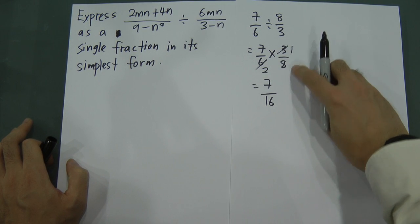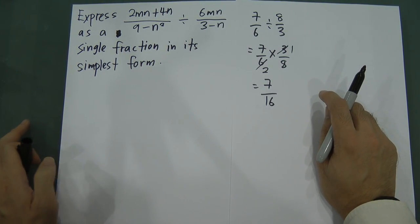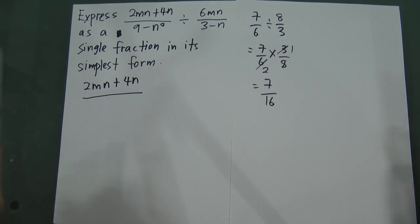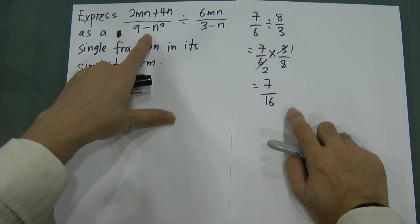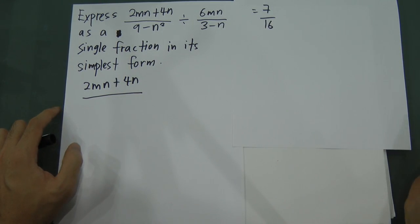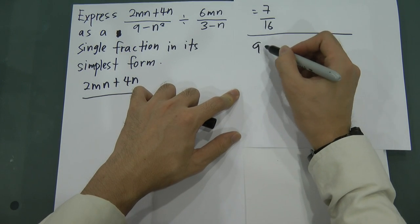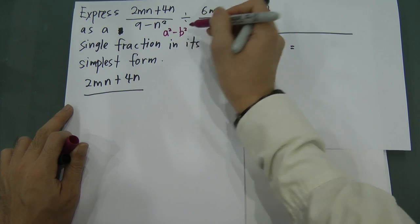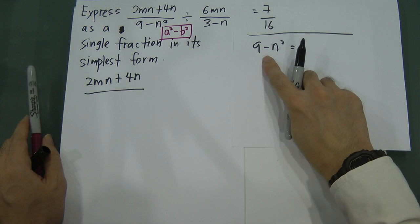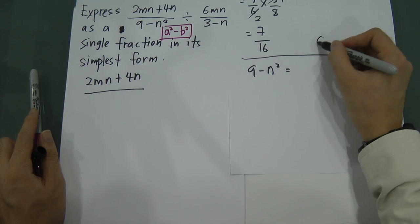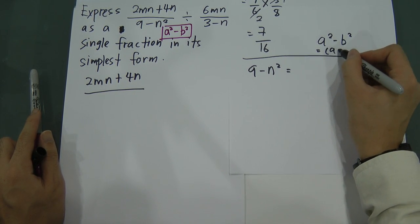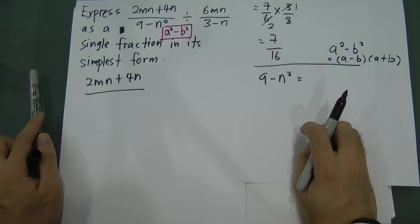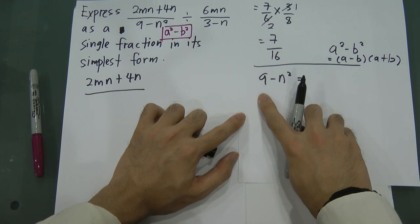In Example 3 with 2m over (m plus 4n) divided by something involving (9 minus n-squared), you must recognize the formula. When you see 9 minus n-squared, you need to know the difference of squares formula: a-squared minus b-squared equals (a minus b)(a plus b). Since 9 is 3-squared, we write this as 3-squared minus n-squared.